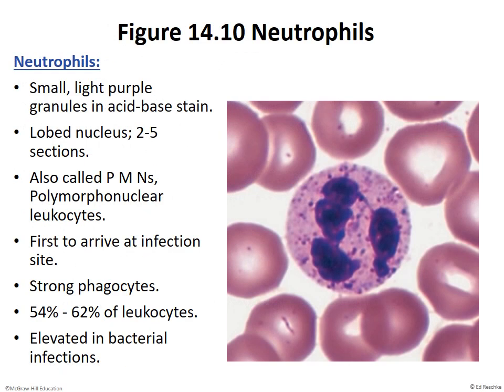We start with the neutrophil, the most common of the white blood cells. While they are granulocytes, the granules in this instance are not the defining feature. The defining feature is this weird multi-lobed nucleus inside of it — it's going to have about three different lobes that should be visible on any picture. It's surrounded by a bunch of red blood cells, which are the most common formed elements of the body.